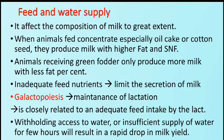The next factor is feed and water supply, which affects the composition of milk to a great extent. When animals are fed concentrates, especially oil cake or cotton seed, they produce milk with higher fat and SNF. Animals receiving green fodder only produce milk with less fat percent. Inadequate feed nutrients limits the secretion of milk. This relates to the concept of galactopoiesis — the maintenance of lactation — which is closely related to adequate feed intake. Withholding or insufficient supply of water for a few hours will result in a rapid drop in milk yield.